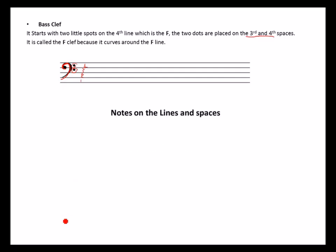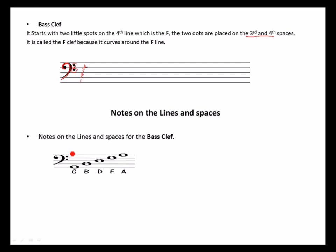The lines of the bass clef are: G on the first line, B on the second line, D on the third line, F on the fourth line, and A on the fifth line. We use the phrase 'Gary Bex Does Funny Acts' — G for Gary, B for Bex, D for Does, F for Funny, A for Acts — to help remember them.